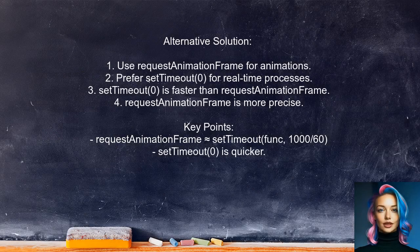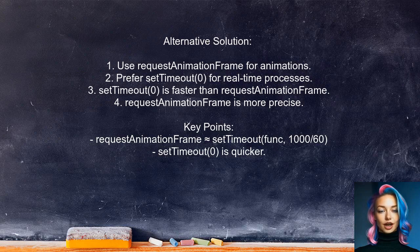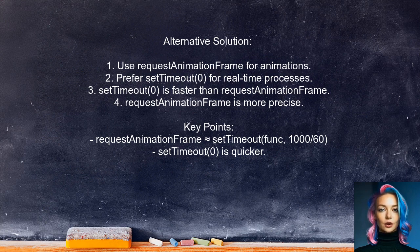According to another user, the choice between setTimeout with zero delay and requestAnimationFrame depends on the context. For animations, requestAnimationFrame is preferred, while for real-time processes, setTimeout with zero delay is faster. They explain that requestAnimationFrame operates like setTimeout with a delay of about 16 milliseconds, making setTimeout zero delay quicker. However, requestAnimationFrame is more precise than setTimeout.